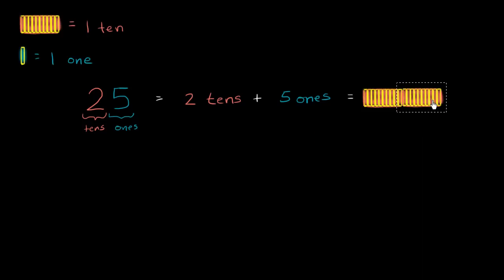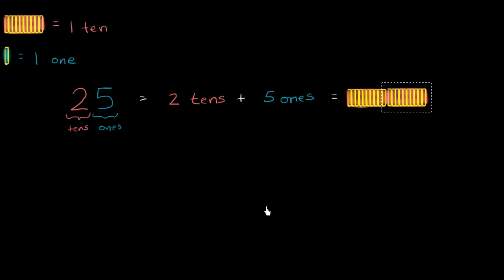So you have your two tens. That's your two tens right over there. That really represents 20, plus your five ones.